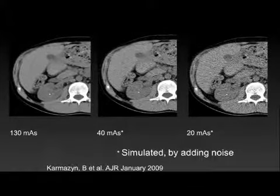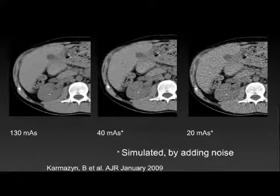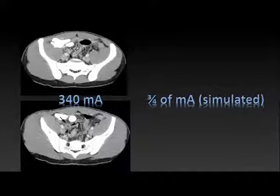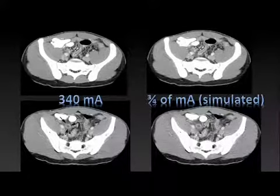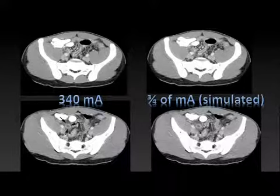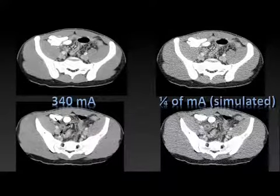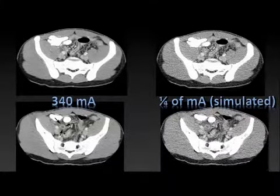At 130 mA, 40 mA, 20 mA — no problem finding that particular stone. Clearly in the workup of suspected renal stones, low-dose technique makes all the sense in the world. But how about for acute appendicitis? We looked at this at Duke. Here's a child with acute appendicitis at routine dose — no trouble making that diagnosis. If we decrease the dose by 25%, dropping the mA, you can still make the diagnosis with confidence. But if we drop the dose by 75%, the image is so noisy that we wouldn't be able to make the diagnosis confidently at all.